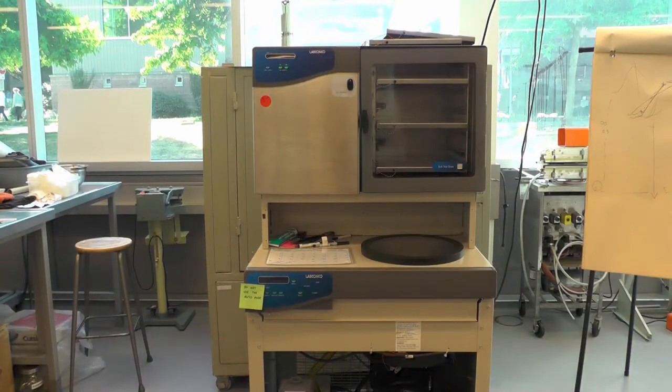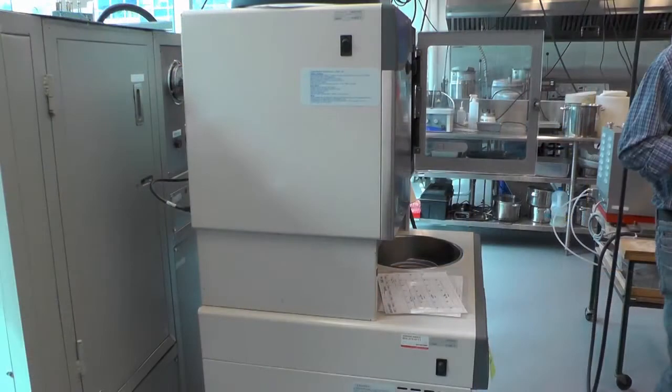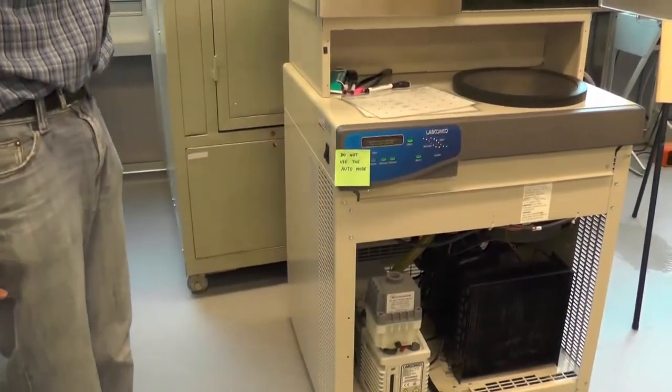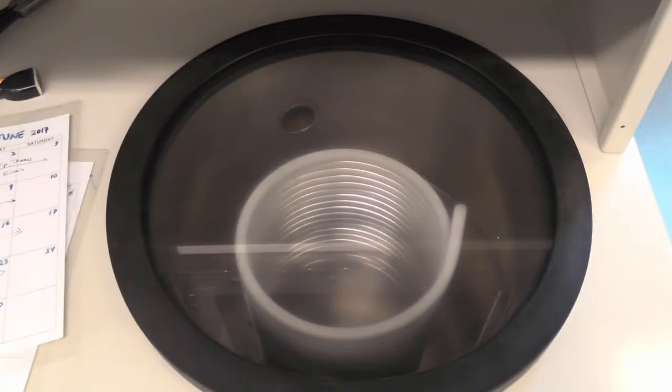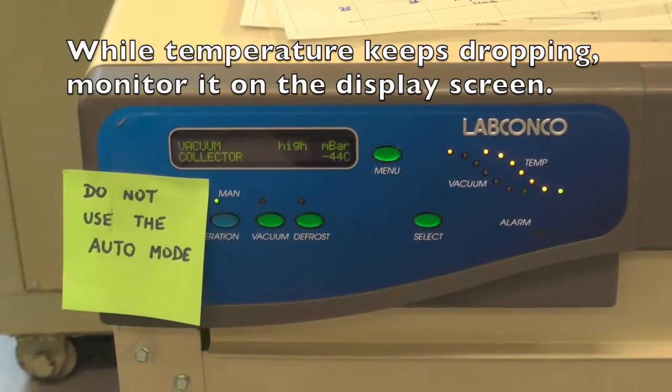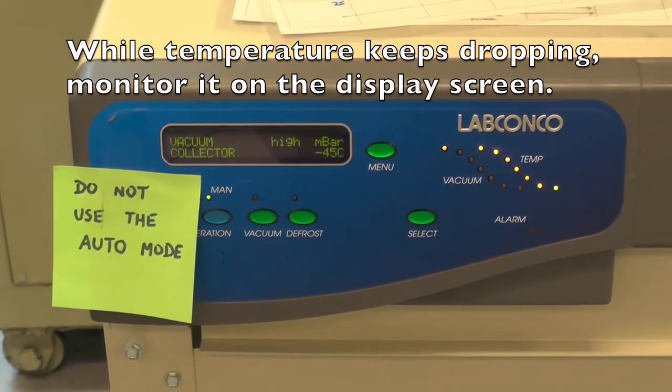To turn on the vacuum freeze dryer, turn both the vacuum compressor and tray dryer switches which are located on the left side of the machine to the on position. Wait approximately 20 minutes for the water collector to cool down to operating temperatures of negative 52 to negative 53 degrees Celsius from room temperature.